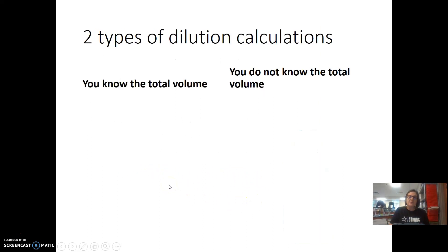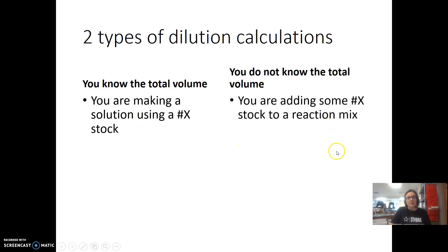So there's two types of dilution calculations. Ones where you don't know the total volume and ones where you do. The ones where you know the total volume is if you're just making a solution using a concentrate. Maybe a protocol calls for 250 milliliters of a buffer. You know the total volume. The kinds where you don't know the total volume are if you already have something and you need to add to it some concentrate, and I'm going to show you an example of each one.